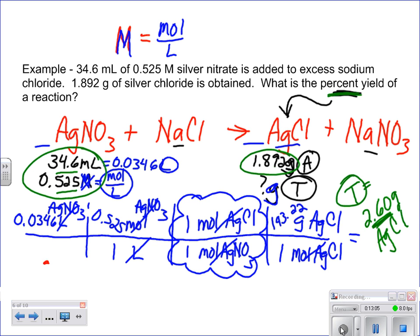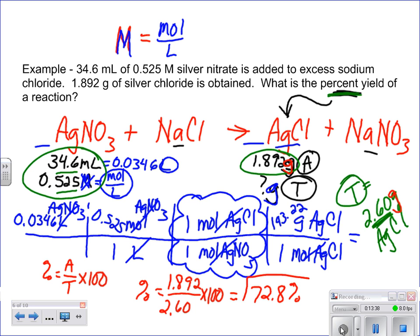Now to calculate this, we say our percent yield equals actual divided by theoretical times 100. In this case, it is our actual of 1.892 grams divided by 2.60 grams. They cancel out because we purposely made these be the same unit. We solved for the same thing. Then we multiply times 100. In this case, we end up getting 72.8% yield, a little bit better than our last one. That is a percent yield problem. Next video will be energy cuts.